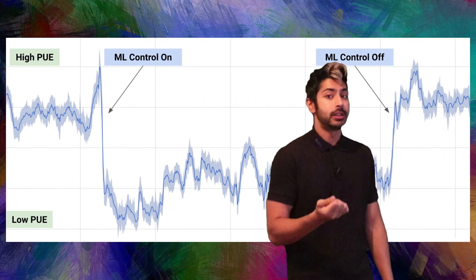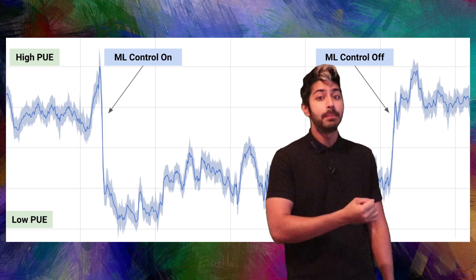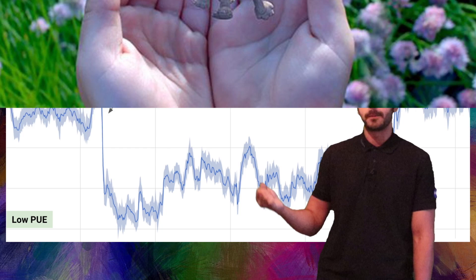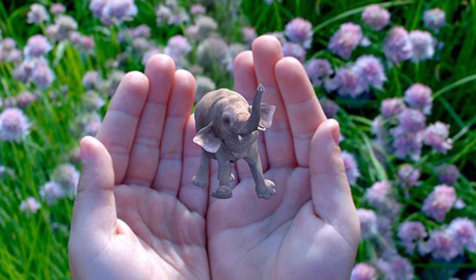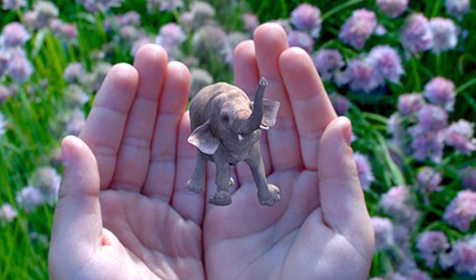Using reinforcement learning, you can use feedback data, such as how much electricity was used at a certain time period or the average temperature. This is literally how Google reduced the cost of cooling its data centers by a massive amount. So it's the real deal, unlike Magic Leap.